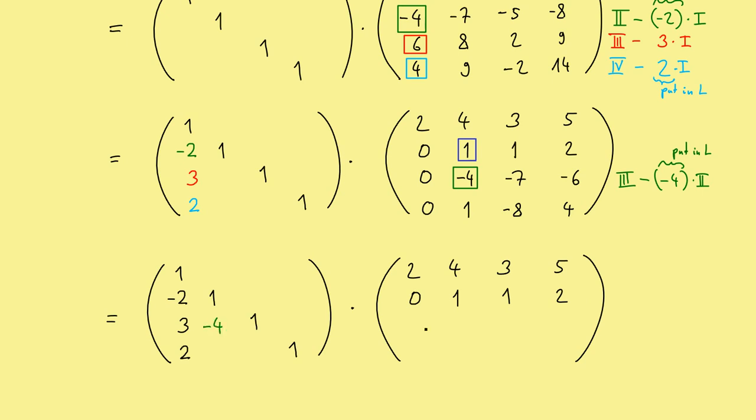And now this multiple is the number we put here at the right position, minus four. And our calculation in the third row gives us here zero zero. Here we have four and minus seven so minus three. And here we have two.